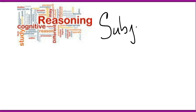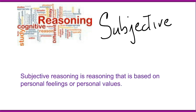The second type of reasoning is subjective. Subjective reasoning is reasoning that is based on personal feelings or personal values. So your light is out. This light goes out all the time. It's the dumbest light in the world. It's out because it's just a dumb light. That's your subjective, personal feeling about the matter. But is it scientific?